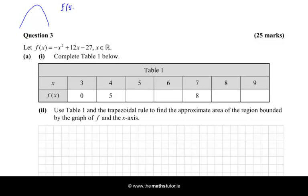So we need to sub 5 in and see what we get. So let's go f of 5, and we get minus 5 squared. So we square the 5, plus 12 times 5, minus 27, which is minus 25, plus 60, minus 27. So that's 60 take away 52, which is 8. So I can put in an 8 there.